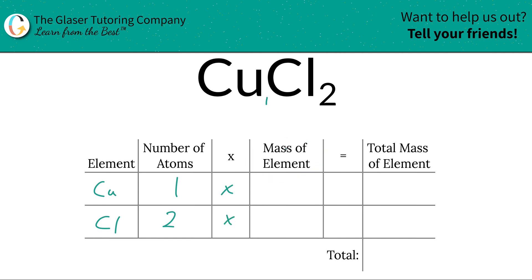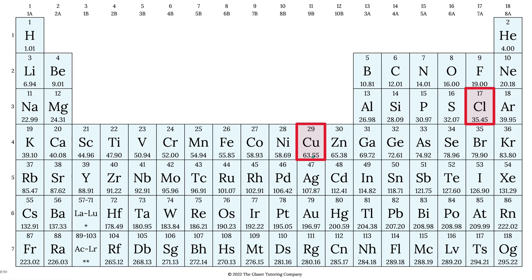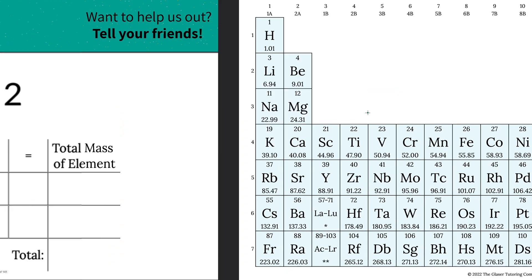Next is the mass of the element, right? We go to the periodic table to find this. So copper here is going to be roughly 63.55. Chlorine is 35.45. Those units can represent grams per mole or AMU depending upon if you're finding molar mass or molecular mass. So let's write that down.